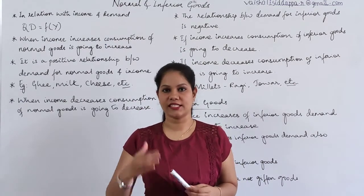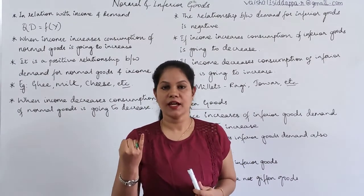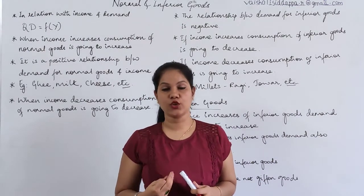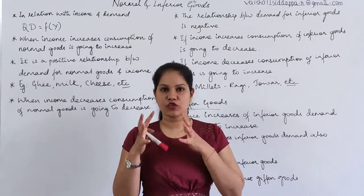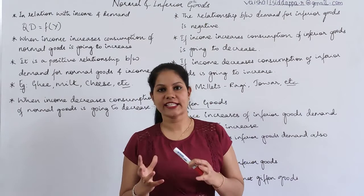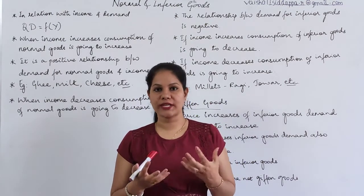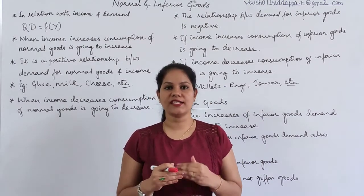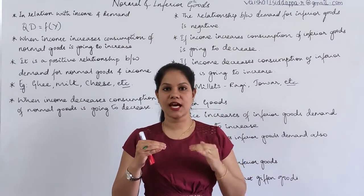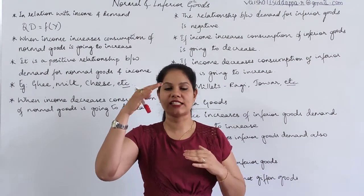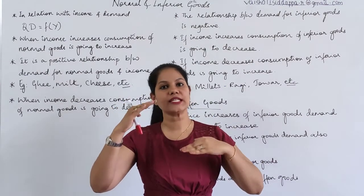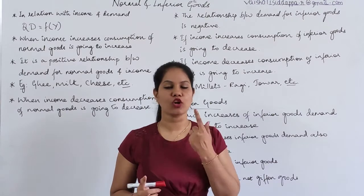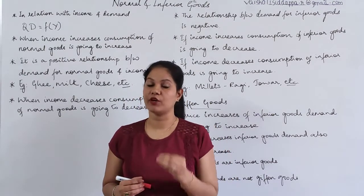The first determinant is the price of the good, the second is income of the consumer, the third is price of related goods, and the fourth is taste and preferences. The price of a good we have already discussed in the law of demand — whenever prices increase, demand decreases; if prices come down, demand increases. Both variables move in opposite directions, so the relationship is negative.